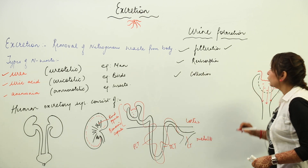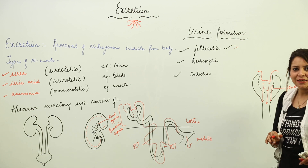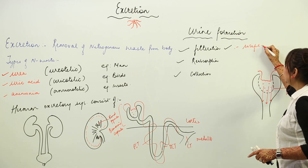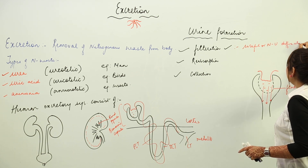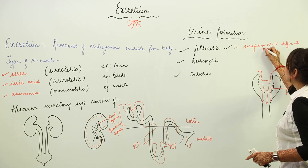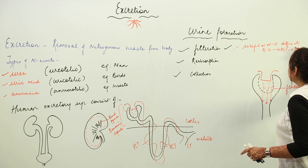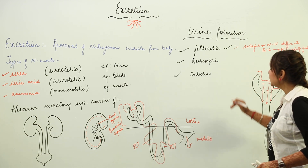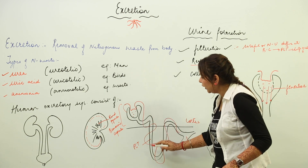So in filtration, all substances — useful or non-useful — just diffuse into the Bowman capsule, pass through the PCT, and reach the loop of Henle. Next we have reabsorption. The capillary is coiled around this region.